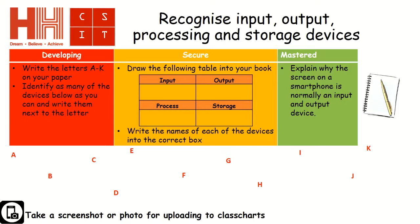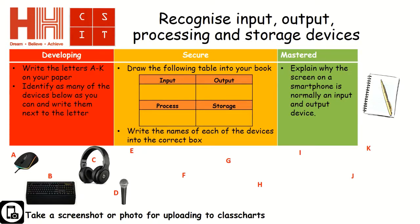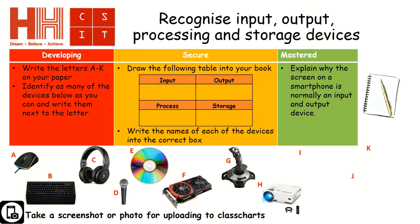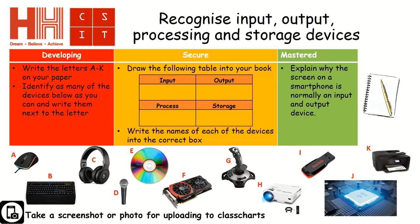It's important that you can recognise input, output, processing and storage devices. So we've got a task for you. At a developing level, you need to write the letters A to K on your paper. I'm going to show you some devices — you need to identify as many as you can and write the letter next to them. You may pause the video during this. Devices A through K are now shown.